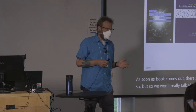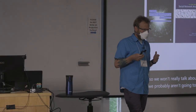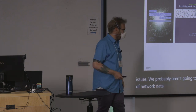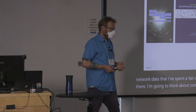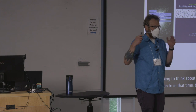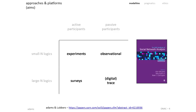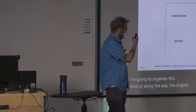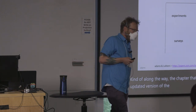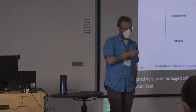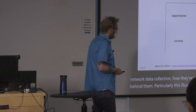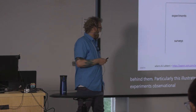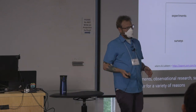We won't really talk about network sampling and measurement issues, or standard evaluation of network data. I'm going to think about something we often give less attention to: the practicalities of how we do this rather than the principles. I'm going to organize this along the lines of a chapter that Miranda Lubbers and I have in the updated Sage book, where we think about modalities of network data collection — particularly four primary approaches: experiments, observational research, surveys and interviews, and digital trace data.